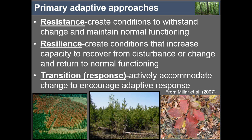The final approach is called transition — taking what we know about what's going to happen to the forest, whether via insects, diseases, or climate, and deliberately manipulating that forest to actively accommodate change. This means increasing the representation of species like red oak that are projected to do better in a future climate, or increasing representation of species that are non-hosts for a given stressor or threat in the landscape.